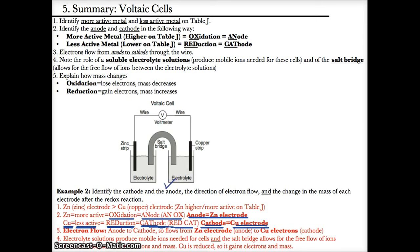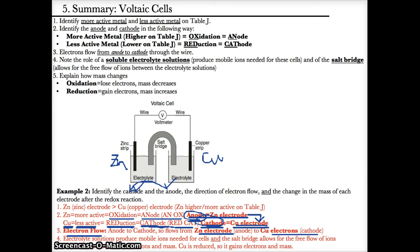In terms of electron flow, since the Zn electrode is the anode and the Cu electrode is the cathode, electrons flow from the Zn electrode to the Cu electrode. The Zn electrode is where electrons start, and the Cu electrode is where electrons wind up — always from the anode to the cathode.